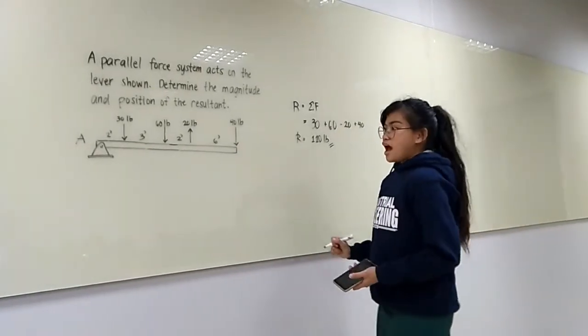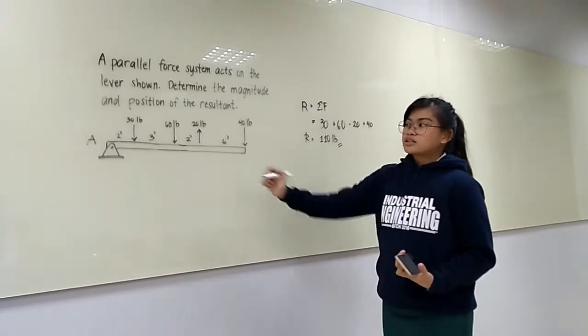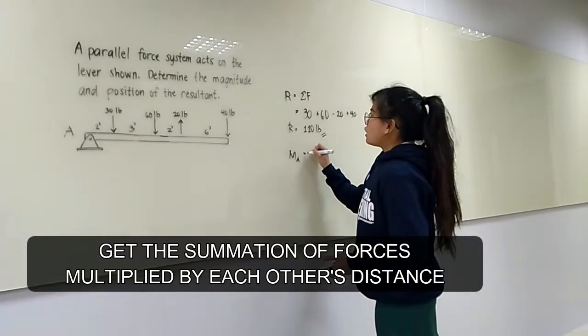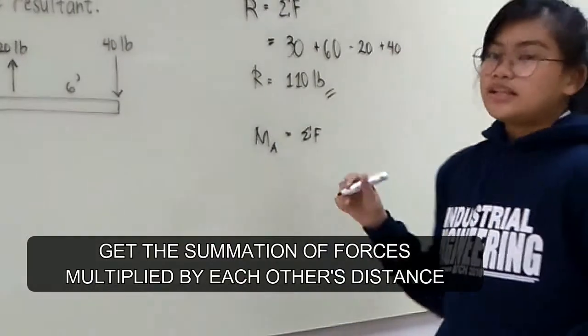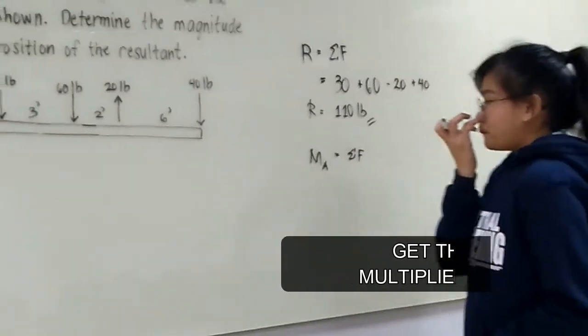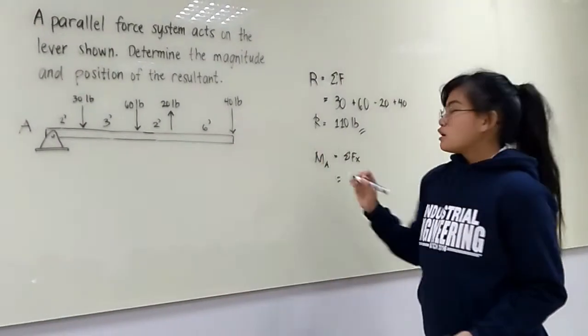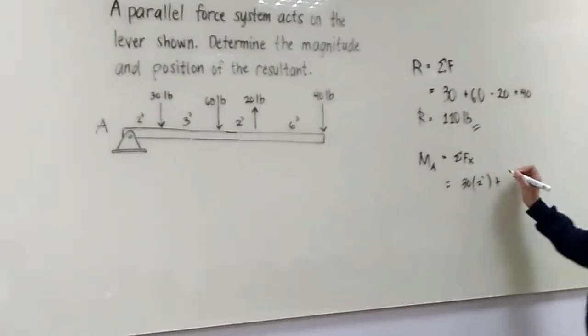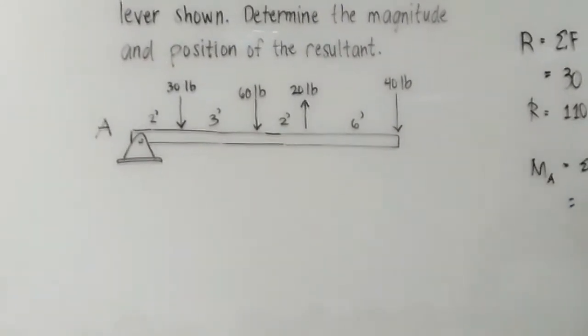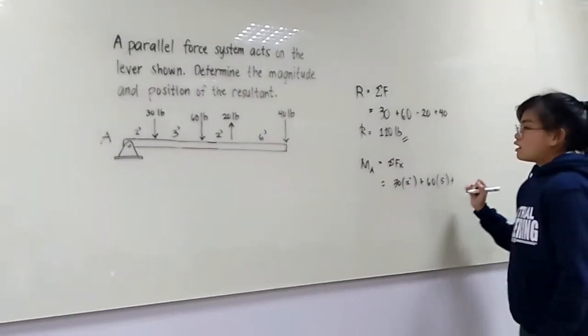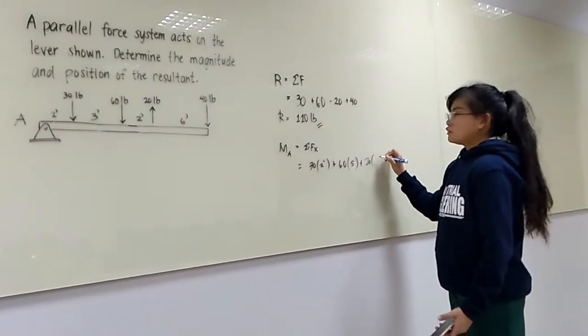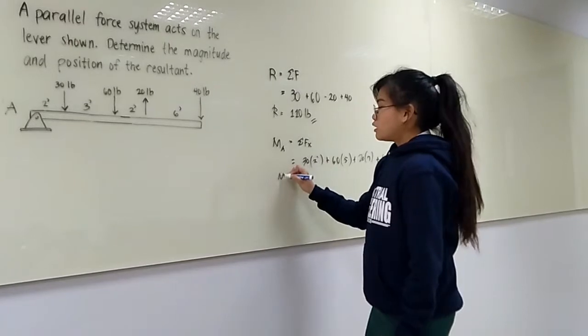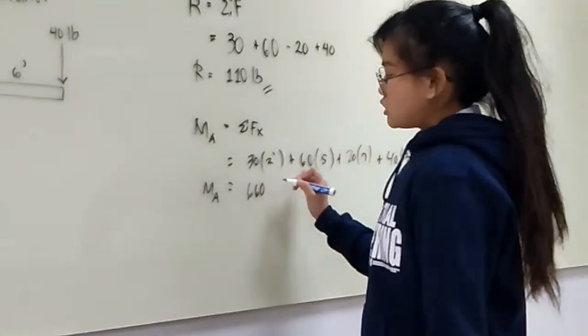Next step is that we have to get the moment force with respect to point A. To get the moment of A, we have to get the summation of all the forces multiplied by its distance to point A. So for the first force, we have positive 30 multiplied by 2, positive 60 multiplied by 5. So applying the same step on the other forces, 20 times 7 plus 40 times 13, which we have the sum is equal to 668 pounds.